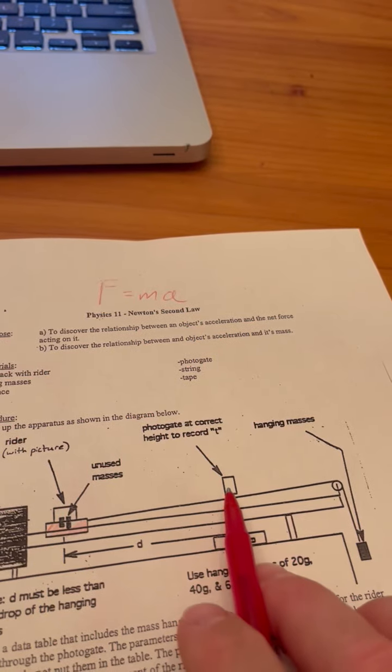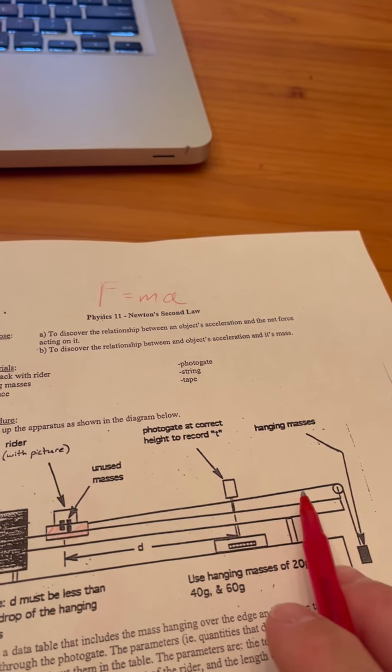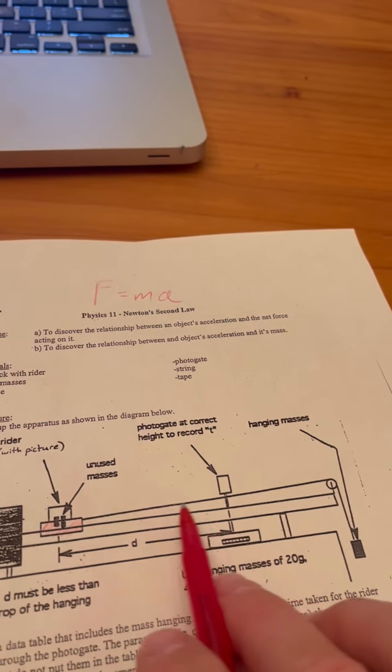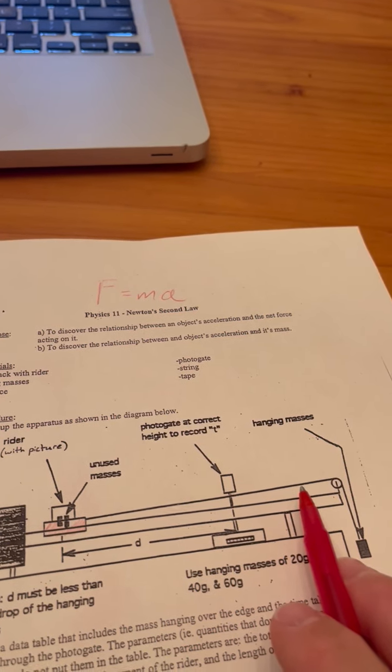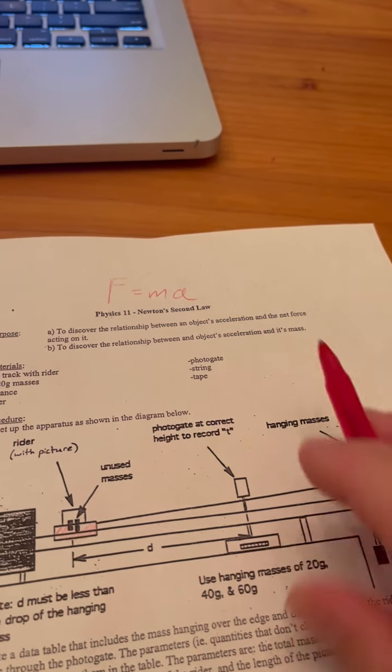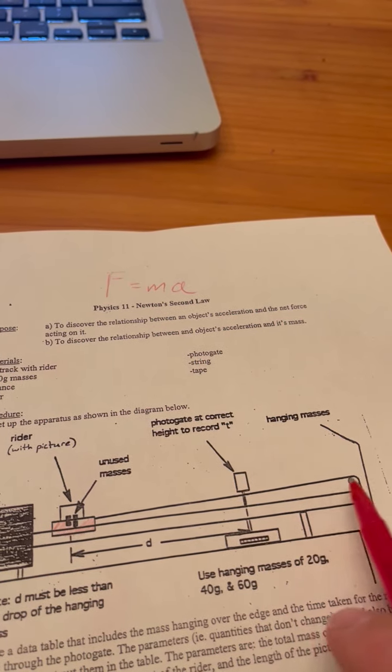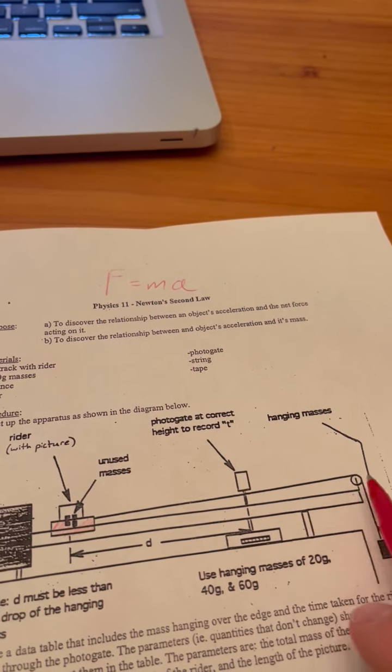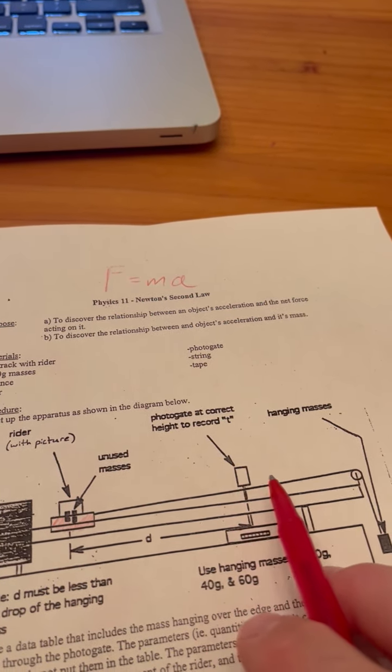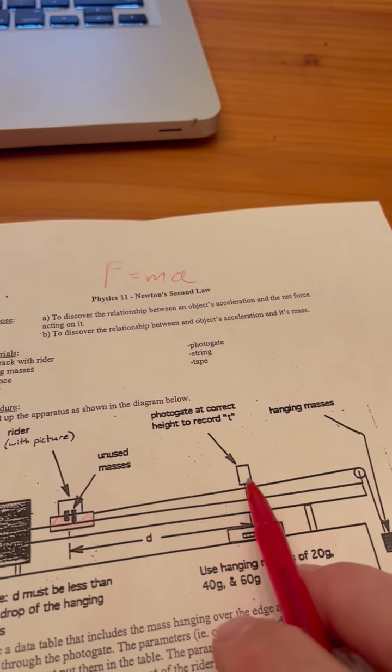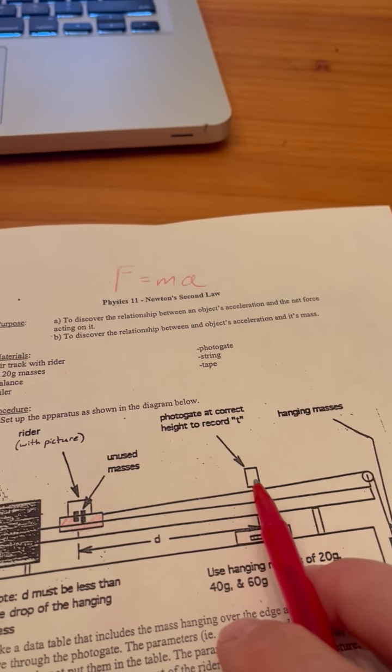You don't want your photogate to be too close to the end, because you want the whole rider to go through the photogate. You can either catch it at the end, or if it doesn't bounce back through, that's okay. But if it hits and bounces back, sometimes that adds more time onto your photogate, so it'll give you an incorrect time.